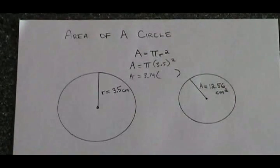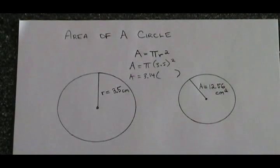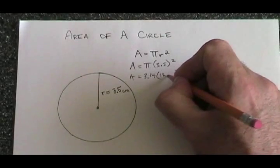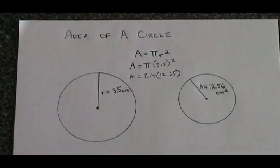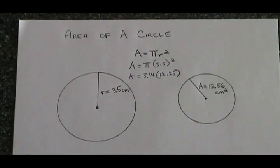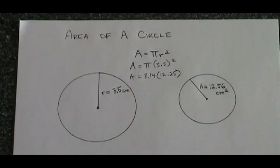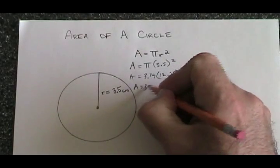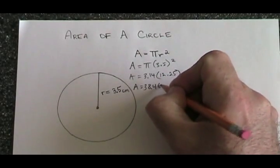3.5 squared is equal to 12.25, so we can replace it with 12.25. 12.25 times 3.14 is equal to 38.465. Our area is 38.465.